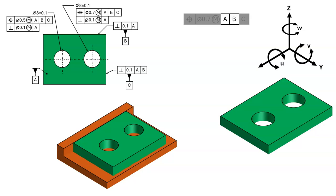While datum feature A is making maximum contact with simulated datum A, the part is slid up against datum feature B. Datum feature B will make at least two points of contact with simulated datum B. This will constrain translation Y and rotation W.